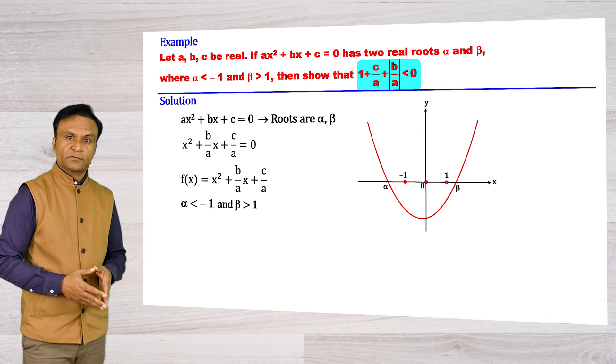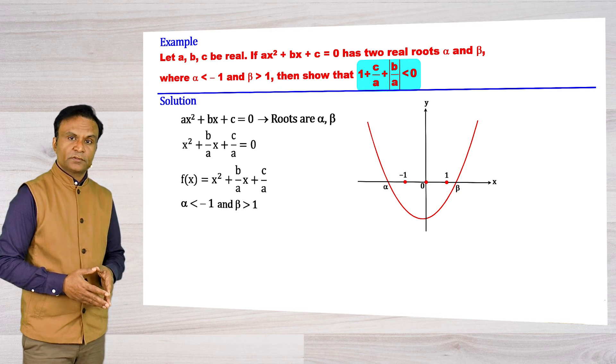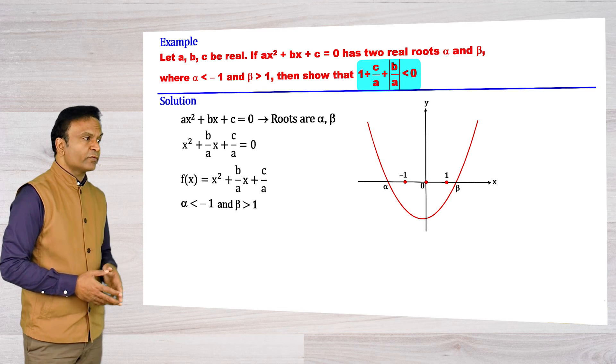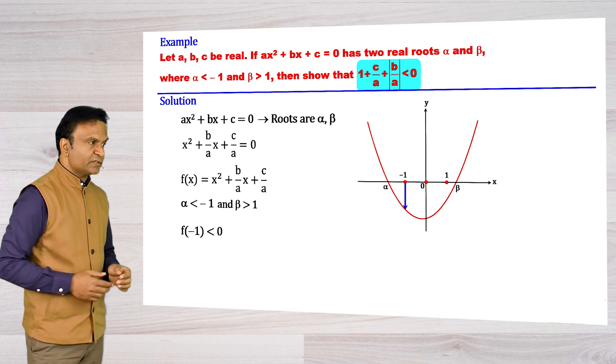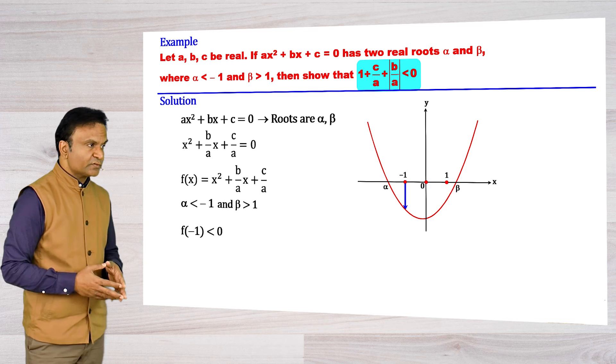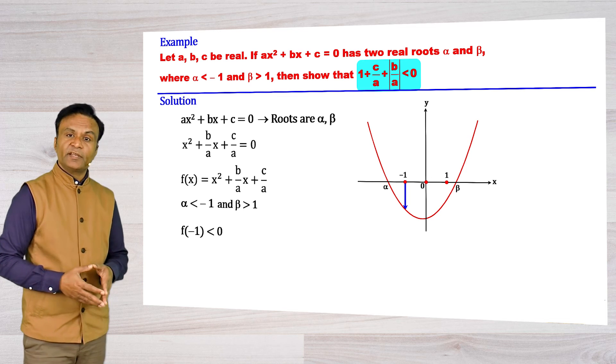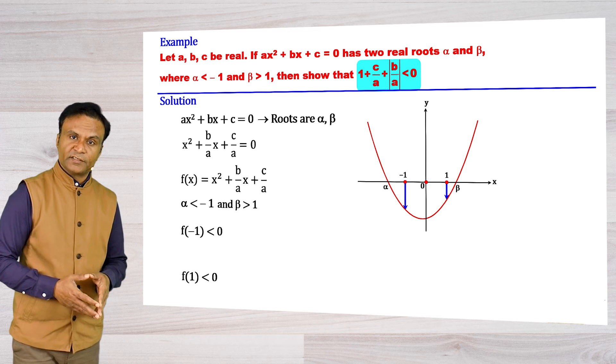When does this occur? When f(-1) is less than 0. You can see f(-1) is negative. Similarly, f(1) is less than 0.